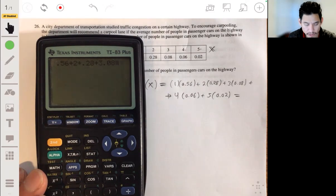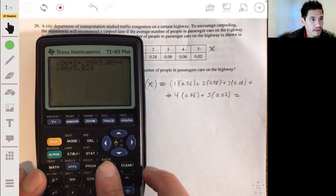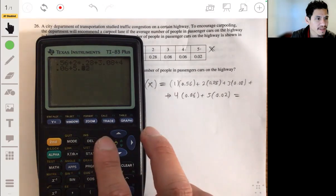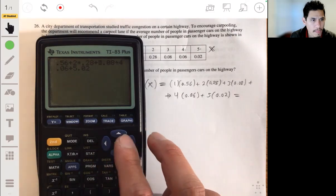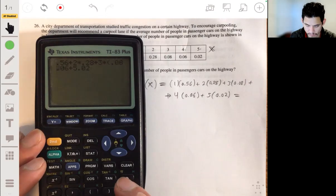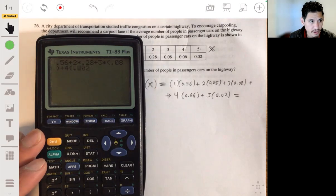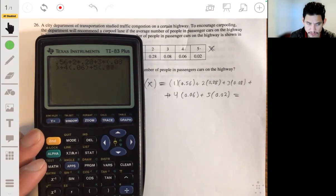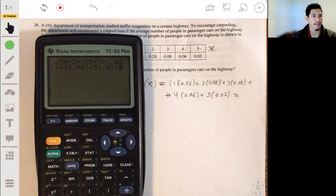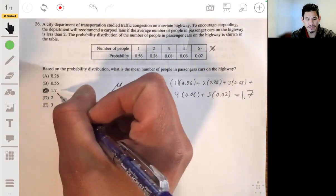I just realized I wasn't typing multiplying. 1.7 plus 3 times 0.06 plus 5 times 0.08. So we get 1.78 plus 4 times 0.26 plus 3 times 0.0, which will give us answer C.